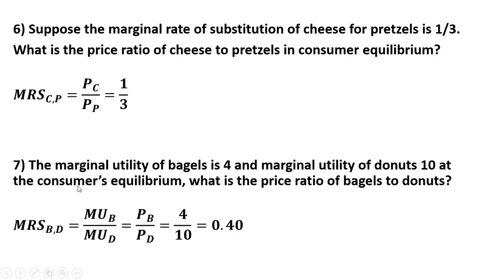Question 7: the marginal utility of bagels is 4 and the marginal utility of donuts equals 10. At the consumer's equilibrium, what is the price ratio of bagels to donuts? The marginal utility of bagels divided by the marginal utility of donuts equals the price ratio of bagels to donuts. That is 4 divided by 10, or 0.4. The marginal rate of substitution of bagels for donuts must equal the price ratio of bagels to donuts.